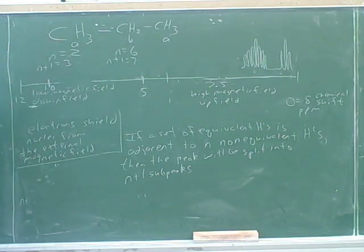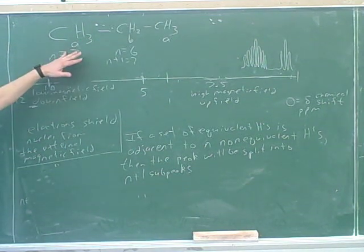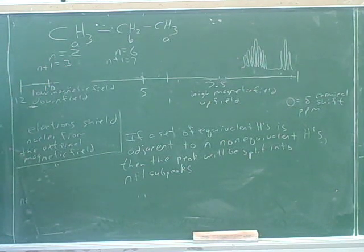So now we have to label all the hydrogens, and then for each group of hydrogens, we have to identify its n. Then we figure out its n plus 1, and that tells us the splitting.